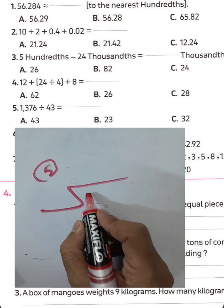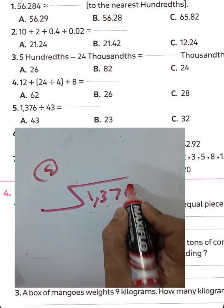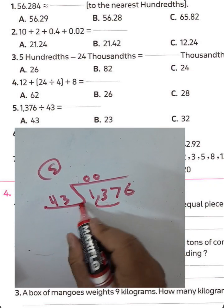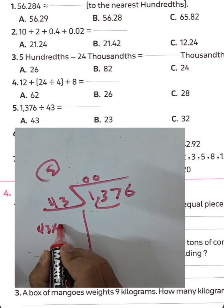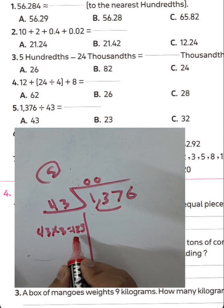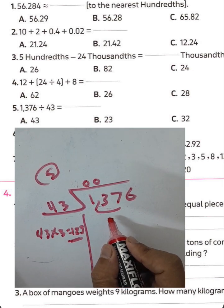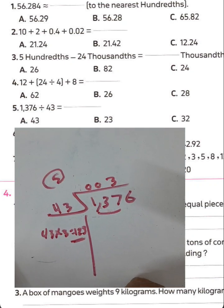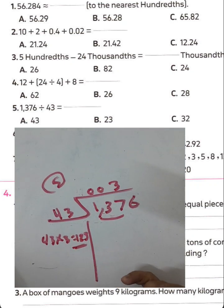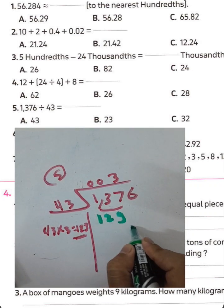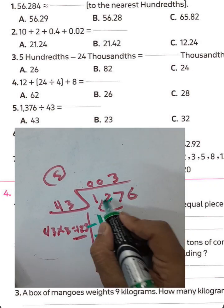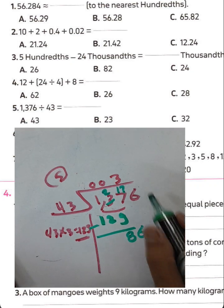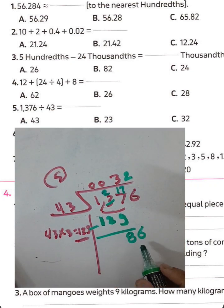Long division: 1,376 divided by 43. 137 divided by 43 — write 3, 3 times 43 equals 129. 137 minus 129 equals 8; bring down 6, giving 86 divided by 43 equals 2. 2 times 43 equals 86. The result is 32.